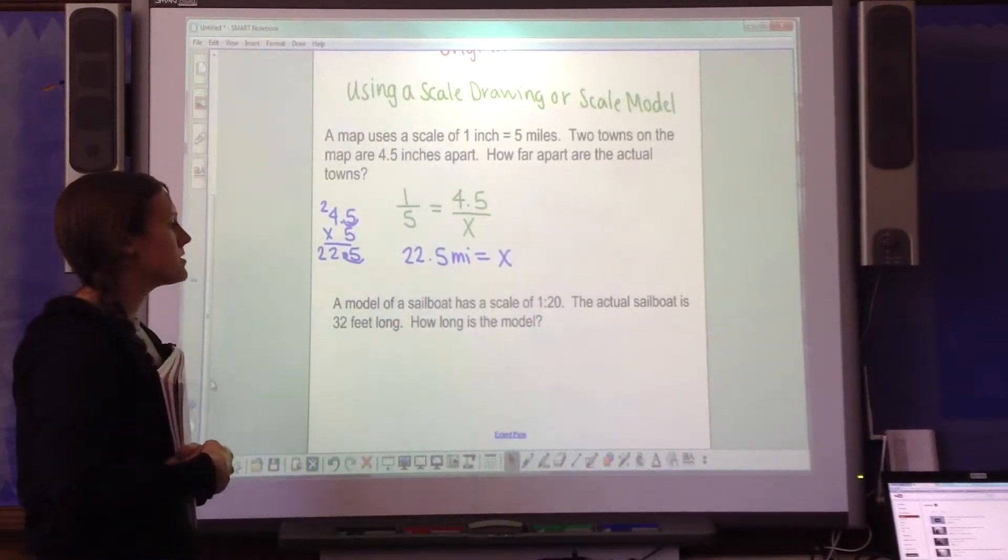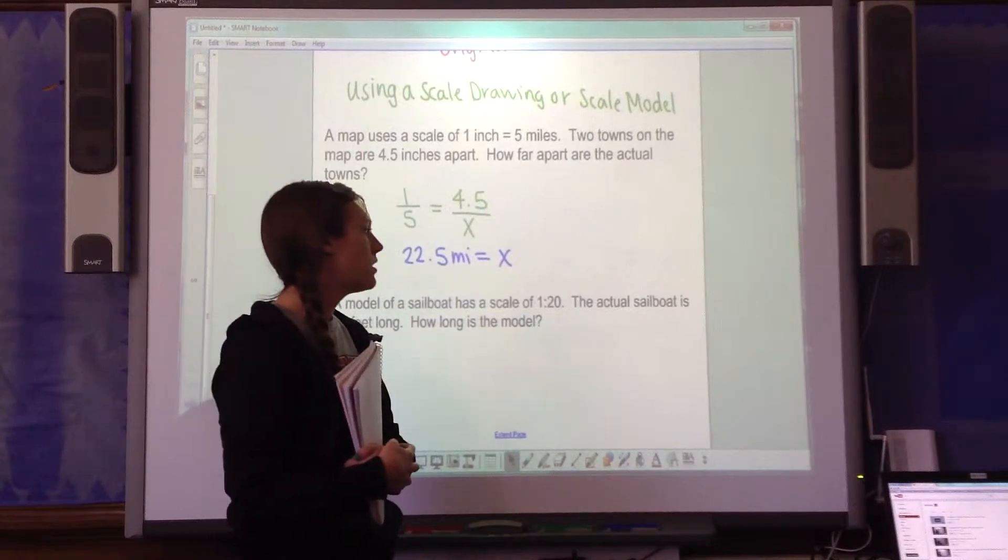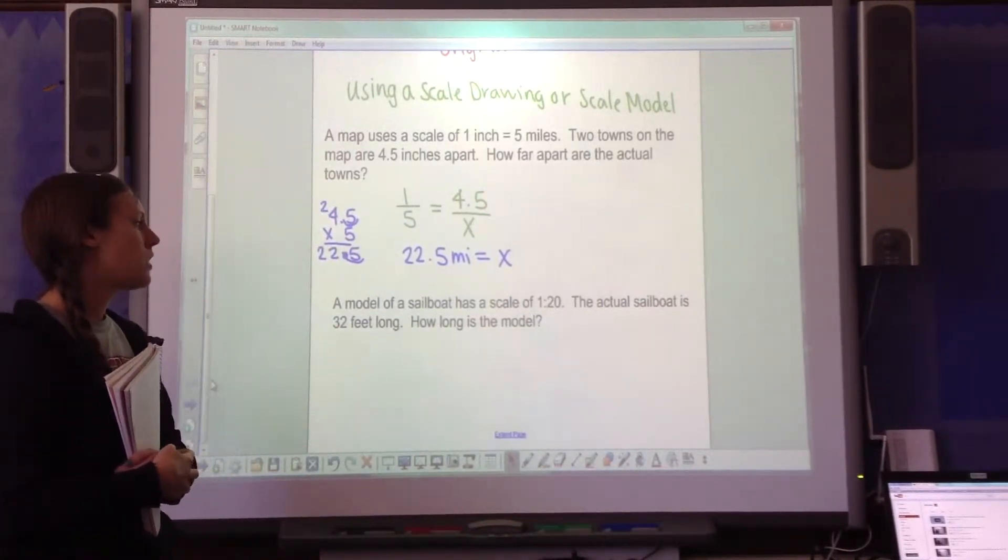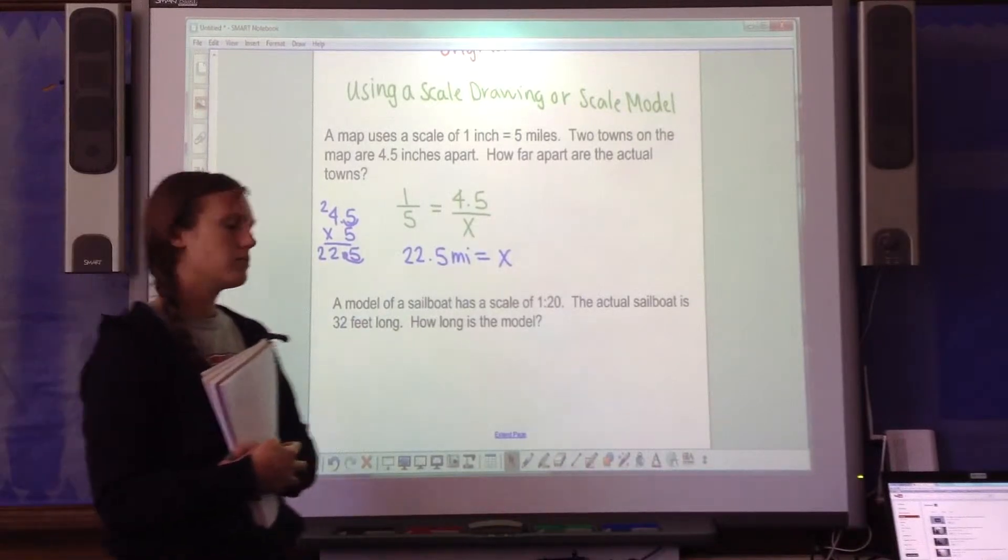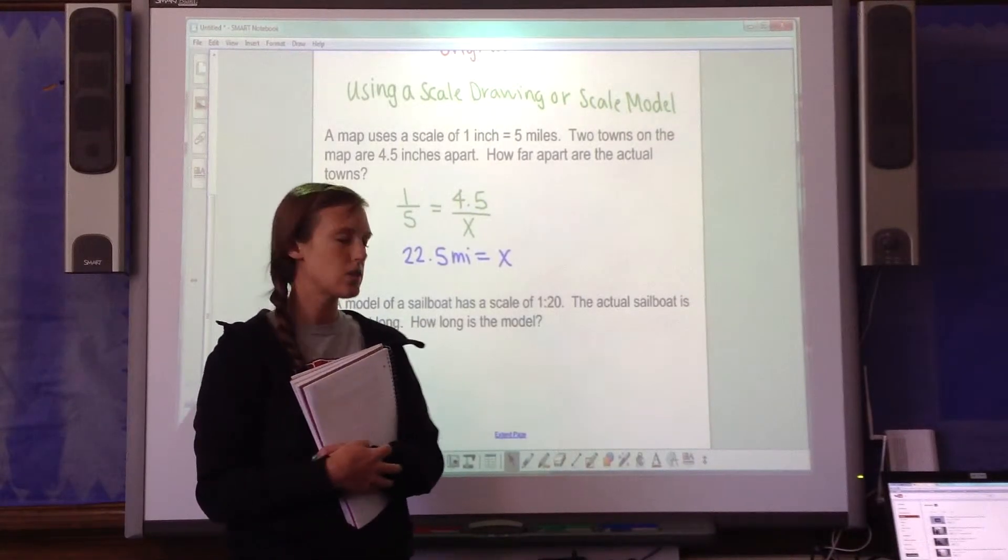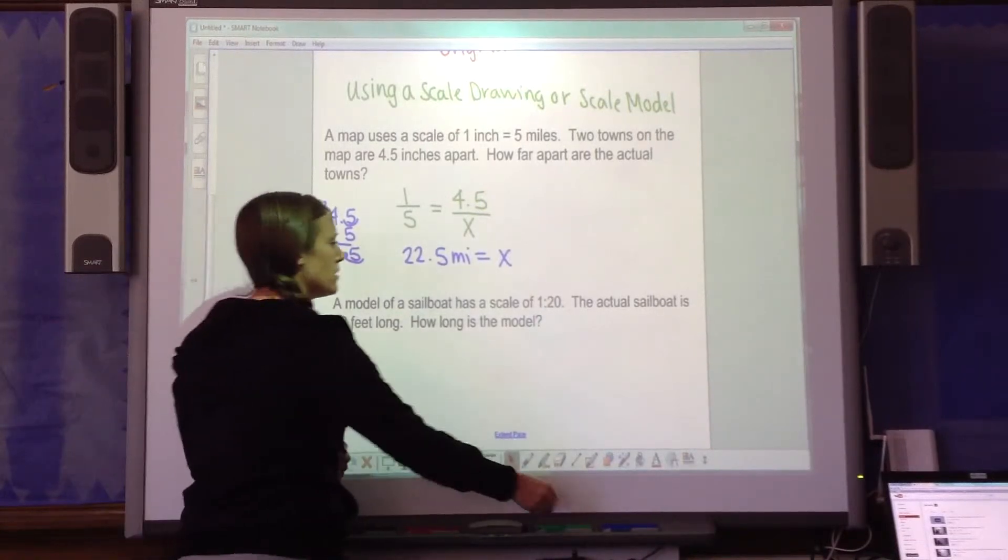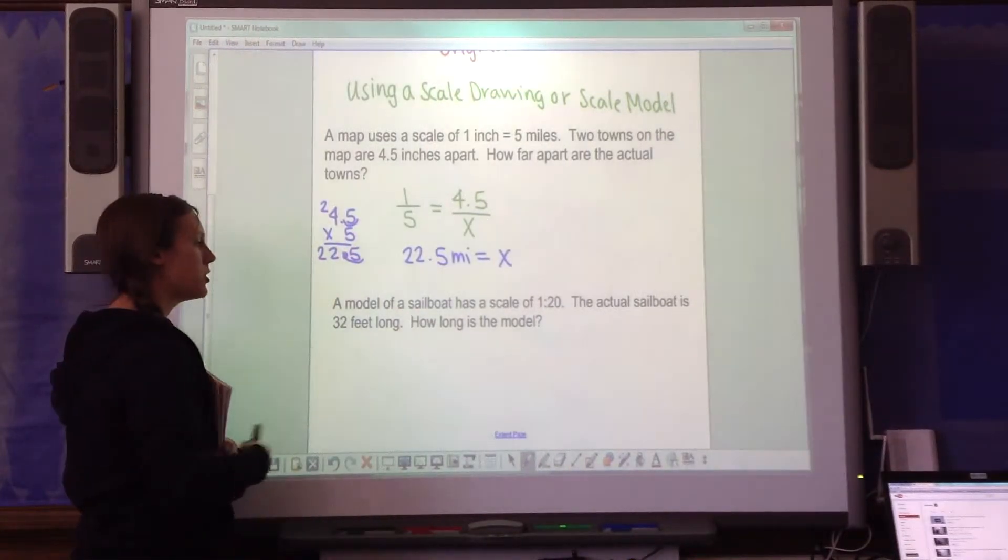Now it's your turn. The model of the sailboat has a scale of 1 to 20. The actual sailboat is 32 feet long. How long is the model? Set up the proportion. Always model over original.